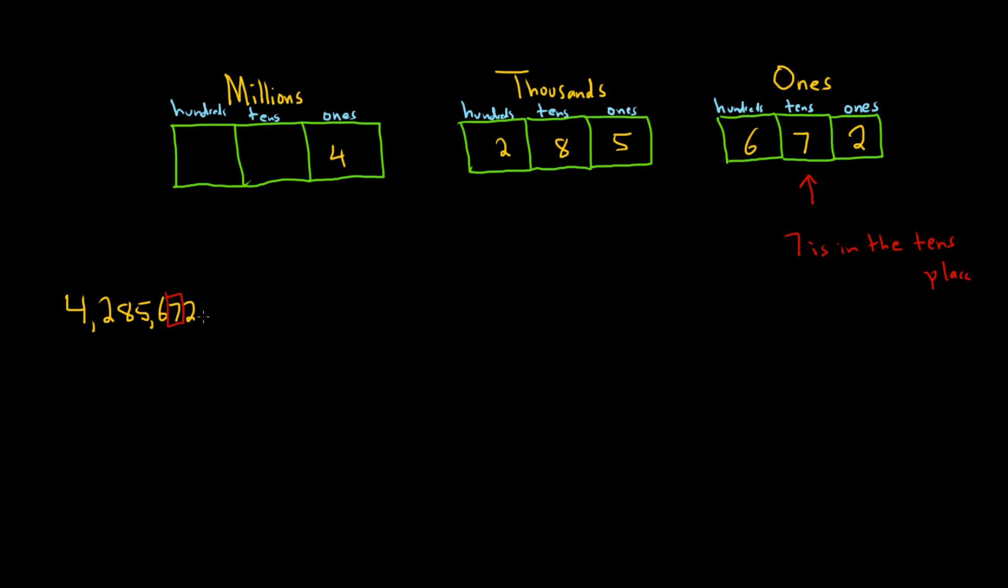Because that's the place value. So it's ones, tens, hundreds, then it goes to thousands. So thousands, tens of thousands, ten-thousands, hundred-thousands, and then it goes to millions.